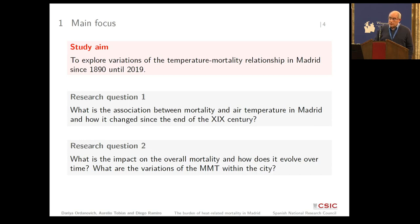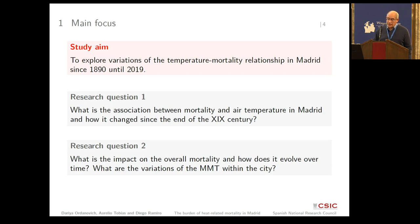What we want to do in this paper is to explore the variations of the temperature-mortality relationship in Madrid between 1890 and 2019. We want to see the association between mortality and ambient temperature in Madrid and how it changes from the 19th century until now, what the impact on overall mortality has been, how it has evolved through time, and we are trying to see how the effect varies within the city — an area where normally there is not much work done.